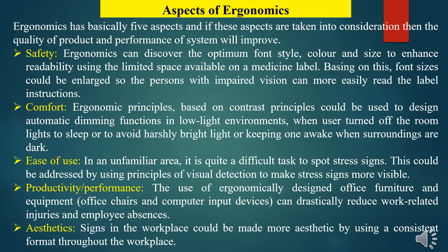When users turn off the room light to sleep or to avoid a harshly bright light keeping one awake when surroundings are dark. For ease of use, in an unfamiliar area, it is quite difficult to spot street signs; this could be addressed by using principles of visual detection to make street signs more visible. For productivity, the use of ergonomically designed office furniture and equipment like office chairs and computer input devices can drastically reduce work-related injuries and employee absence. For aesthetic, signage in the workplace could be made more aesthetic by using a consistent format throughout.